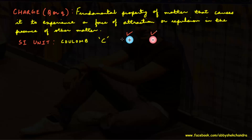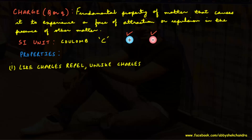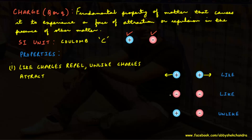There are two types of charges: positive and negative. The properties of electric charges are: one, like charges repel each other while unlike charges attract, which means that two positive or two negative charges will repel each other, while a positive charge and a negative charge will attract each other.